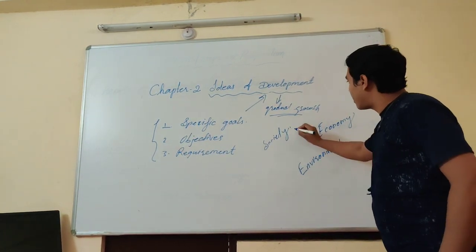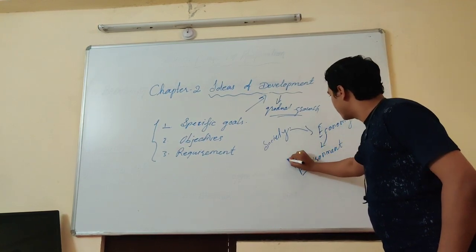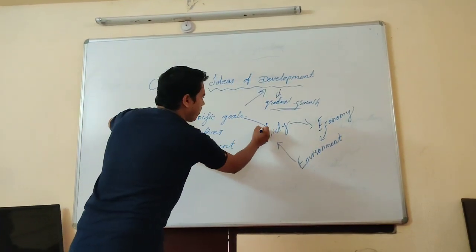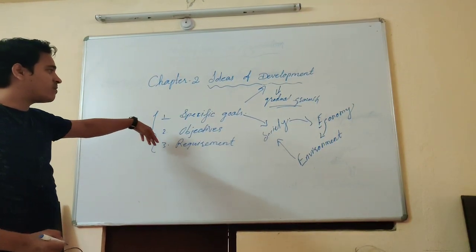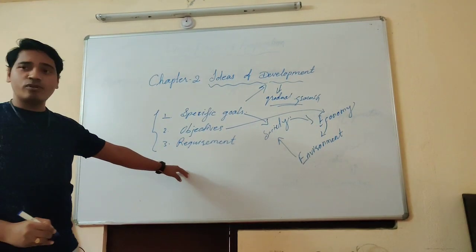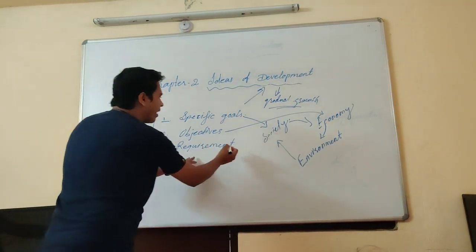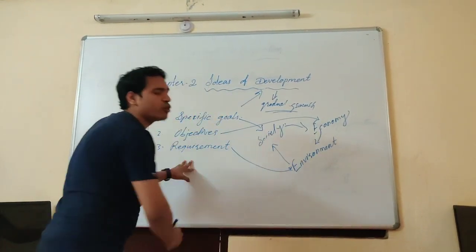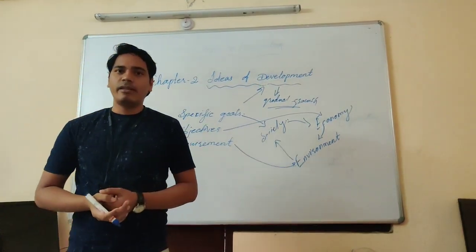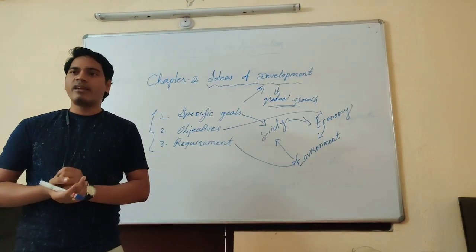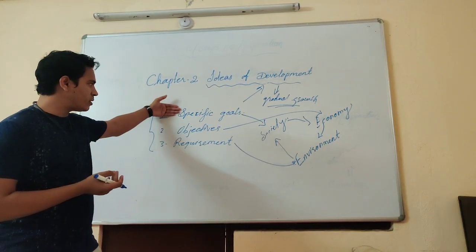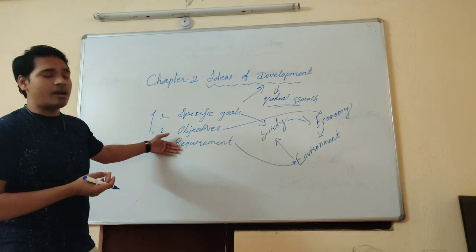All these things are interlinked with each other. While coming to the specific goal, we can fulfill our specific goals through society. And when we come to the third point about requirements, we can collect all kinds of requirements from the environment. Let me repeat: development is the systematic and technical knowledge which meets three things — specific goals, objectives, and technical requirements.